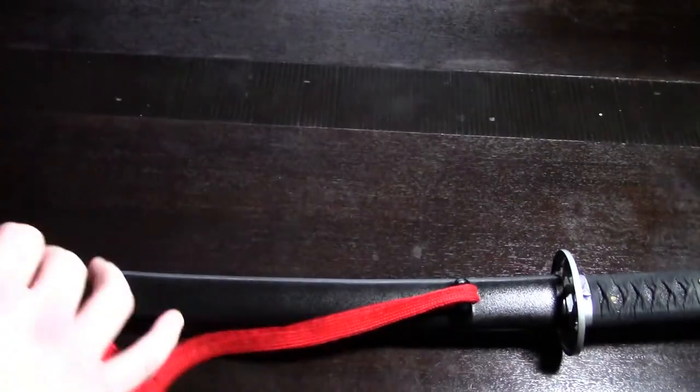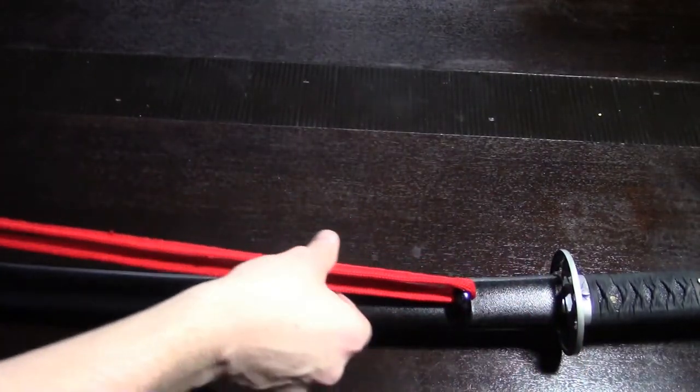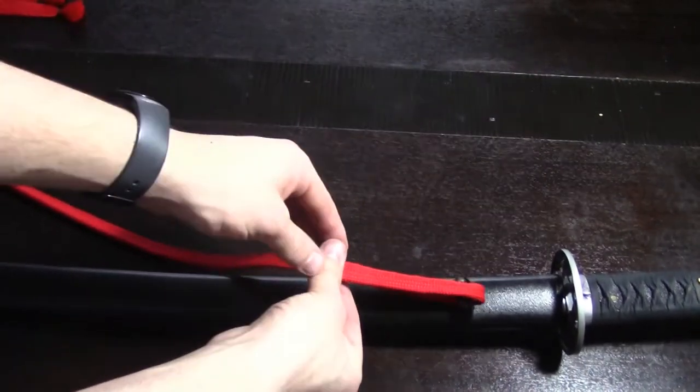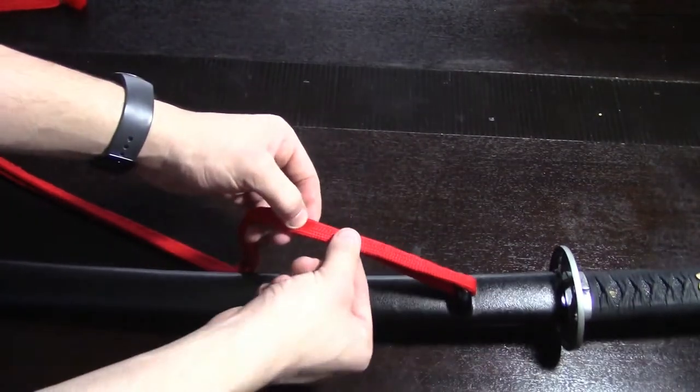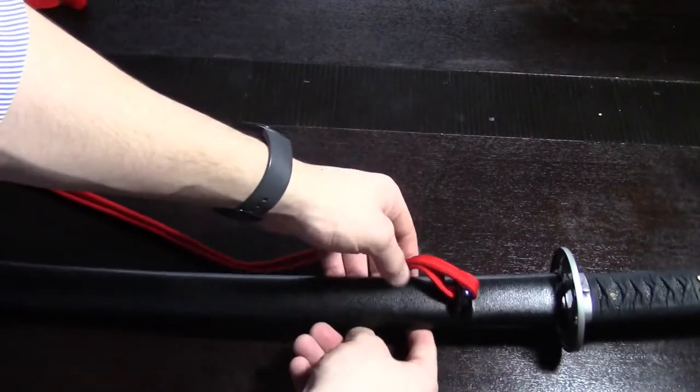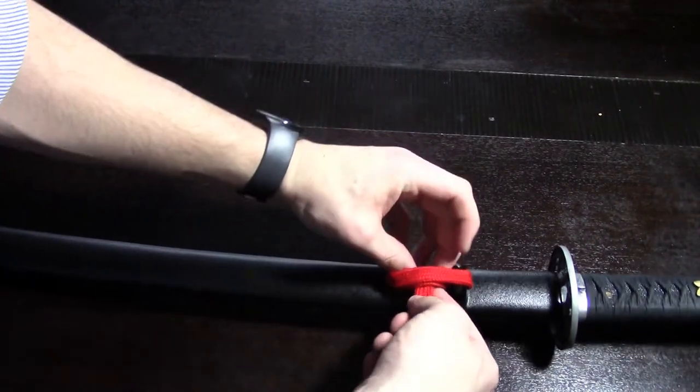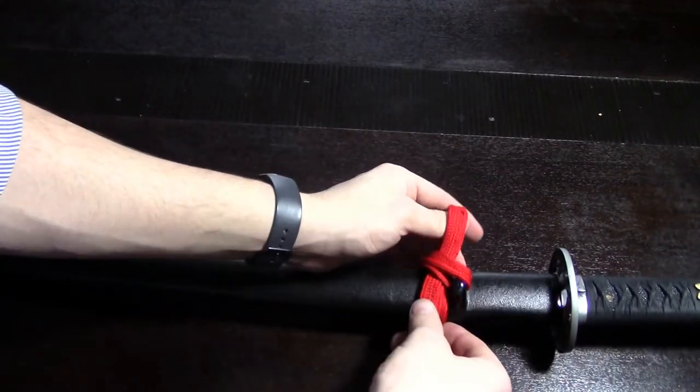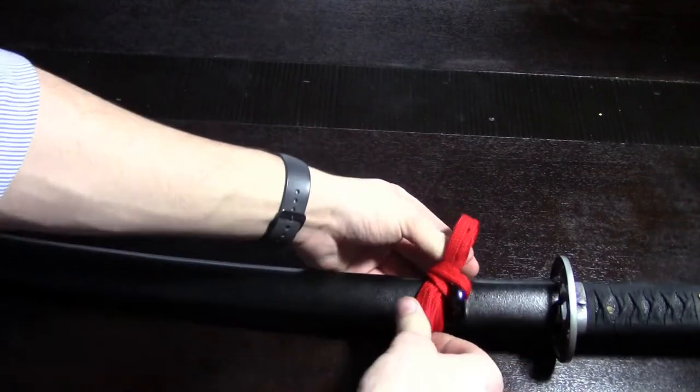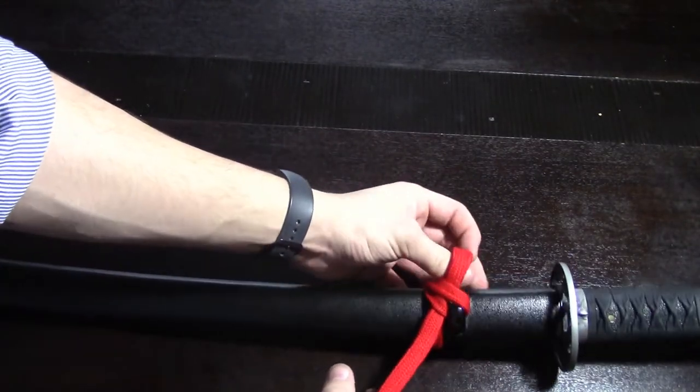So from here, what we do is make sure that our sagyo is even. And now, instead of going up here first, we're just going to keep it all down here. So we go under, through here. There's your one loop.